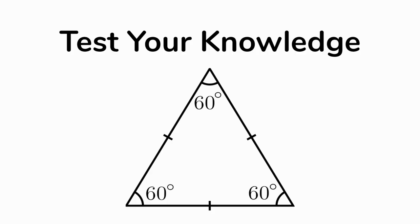Fun fact: every equilateral triangle is an acute triangle. Anytime you see an equilateral triangle, it's automatically acute. It's impossible to make an equilateral triangle with angles bigger than 90 degrees or even with a right angle.